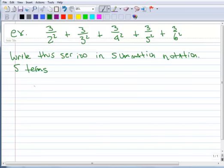When we're all done, we want to have this big summation notation here, and we want to go from k equals one to k equals five. I know five because I have five terms.